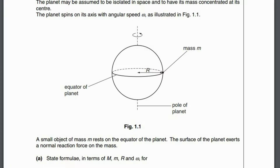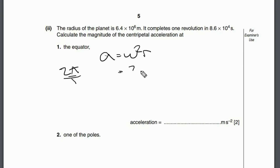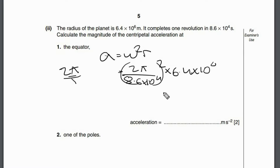The radius of the planet is 6.4×10⁶ m and it completes one revolution in 8.6×10⁴ seconds. Calculate the magnitude of the centripetal acceleration at the equator. Acceleration a = ω²R, where ω = 2π/T = 2π divided by 8.6×10⁴. Squaring omega and multiplying by R = 6.4×10⁶ gives a value of 0.034 m/s².